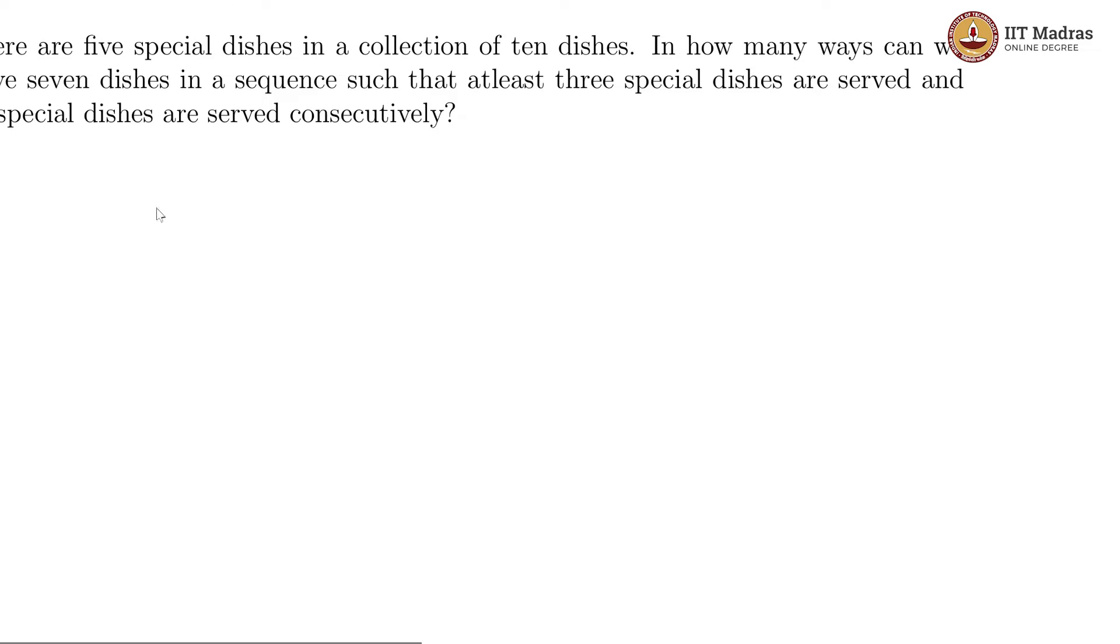In this question, they are saying there are 5 special dishes in a collection of 10 dishes. There are 5 special dishes, let us call them S1, S2, S3, S4 and S5, and there are ordinary dishes which are O1, O2, O3, O4 and O5.